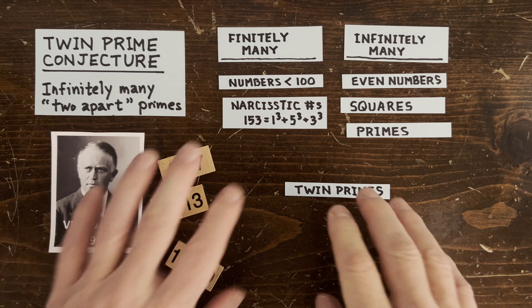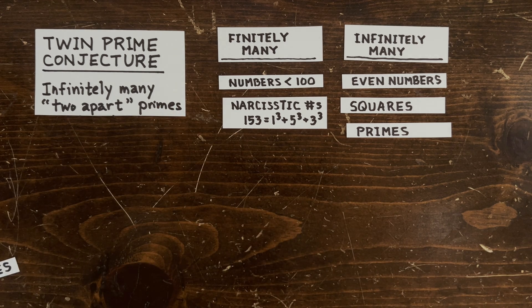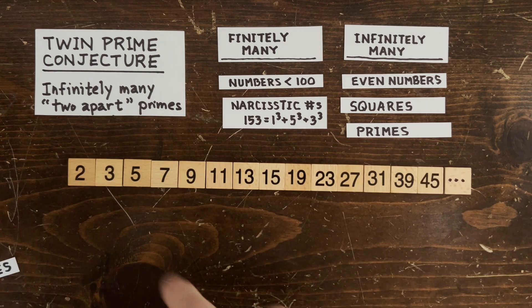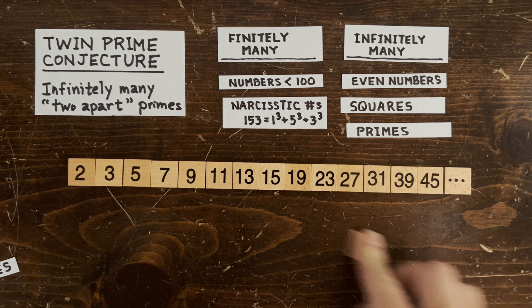So how many twin primes should there be? Imagine if the primes were like this: jump by 2, jump by 2, keep going. Now jump by 4, jump by 4, keep going.